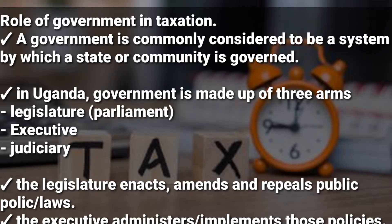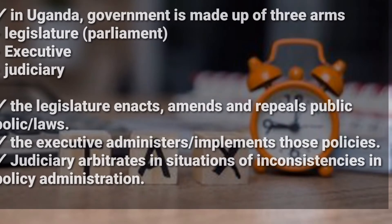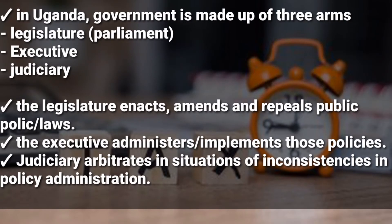In Uganda the government is made up of three arms: the legislature, which is the parliament; the executive; and the judiciary. The legislature enacts, amends, and repeals public policies or laws. The executive administers or implements those policies that were made by the legislature. The judiciary arbitrates in situations of inconsistencies in policy administration.